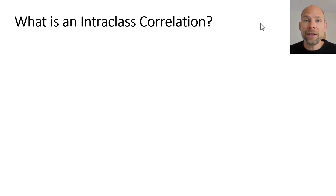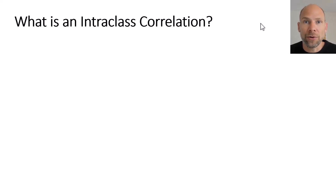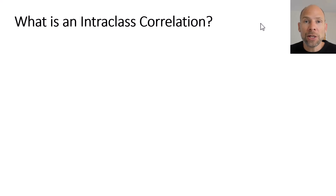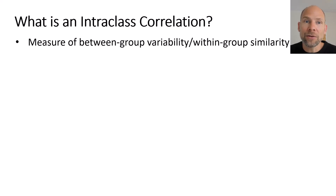In this video I want to address the question of what is an intra-class correlation coefficient. I'm going to start with a conceptual explanation and then show you more of the equations and formalities behind this — but it's not going to be too complicated. An intra-class correlation is a measure of between-group variability, or we could say of within-group similarity.